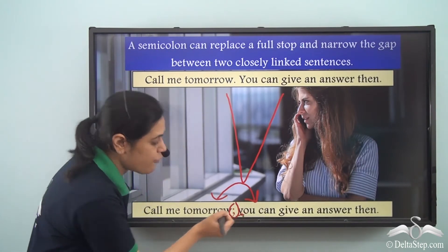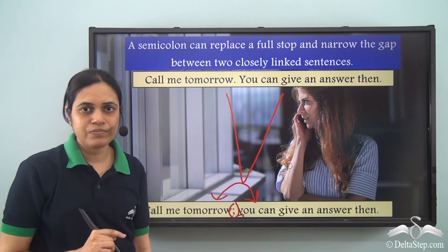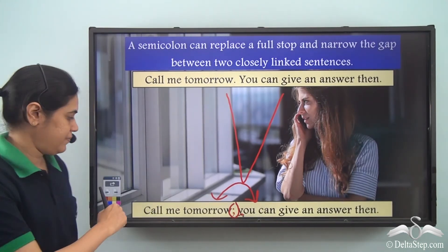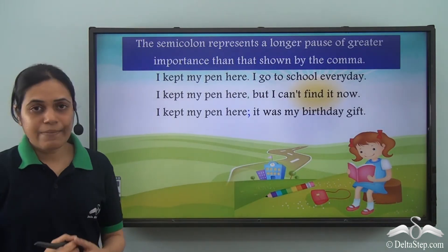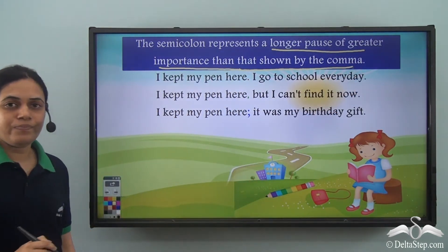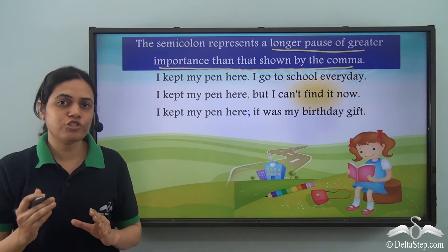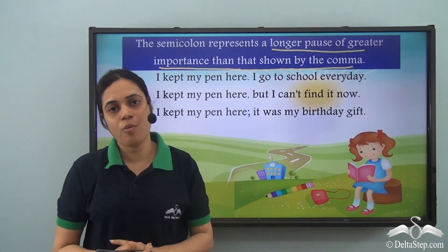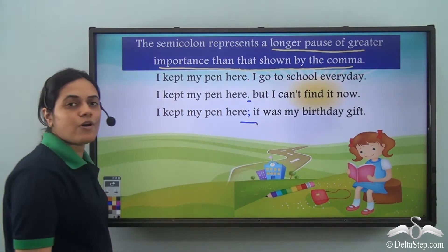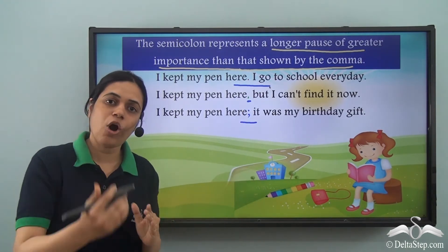The 'y' of 'you' is a small letter because it is in the middle of a sentence. Also notice that after a semicolon we have a space, and there is no space before a semicolon. A semicolon represents a longer pause of greater importance than shown by a comma. So a semicolon has a smaller pause than a full stop but a longer pause than a comma. Comma has the shortest pause.